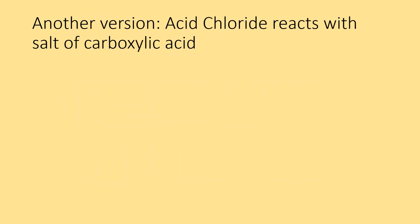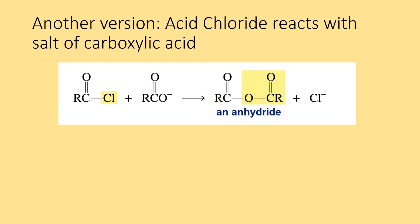One more version: instead of having the acid chloride and the acid, you could have the salt of the acid. There is a metal ion somewhere, but this happens in solution. The chlorine gets kicked off and replaced by the rest of the molecule, and you make an anhydride again. So this is the acid chloride and the carboxylate salt.